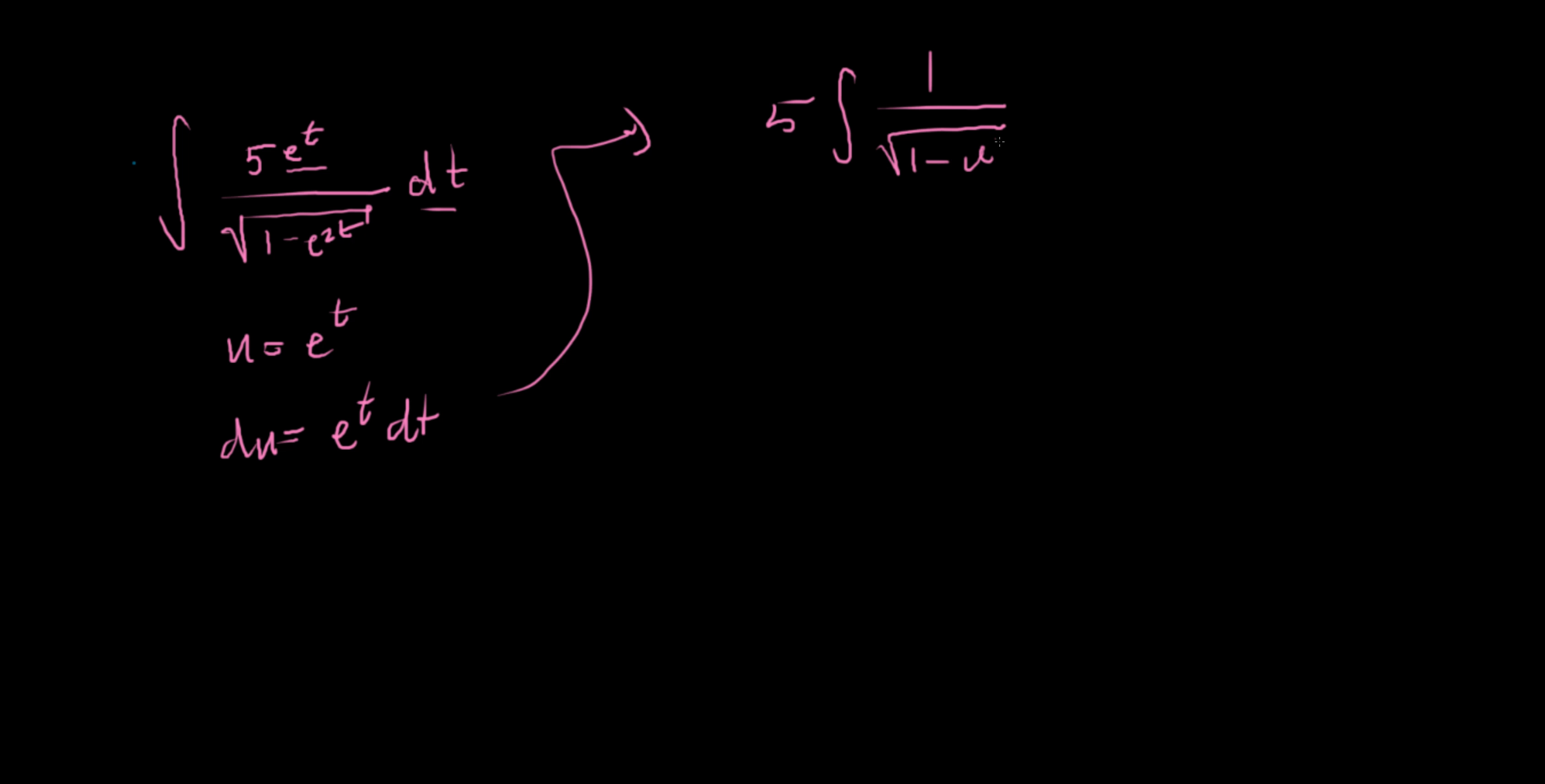Now this, whether or not you can solve this, just depends on whether or not you recognize that this is actually the derivative of the sine inverse function. So 1 over the square root of 1 minus your variable squared is the derivative of sine inverse, so take the integral of that, the antiderivative takes you back to that.